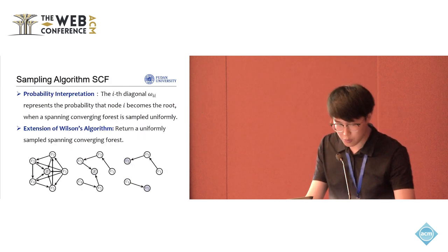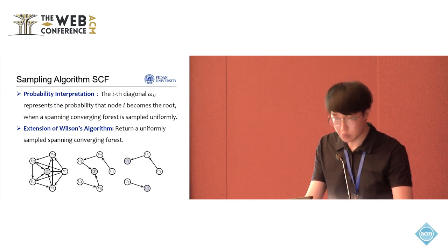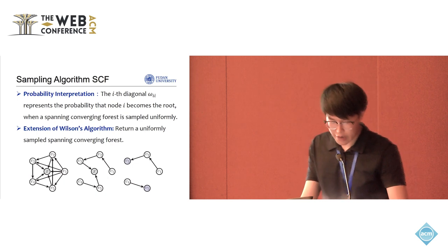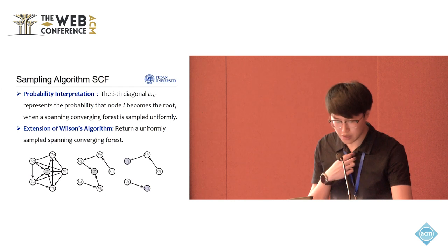Our first algorithm, SCF, is based on the probability interpretation of the diagonal elements of the forest matrix. Specifically, the i-th diagonal element represents the probability that node i is the root when a spanning converging forest is sampled uniformly.